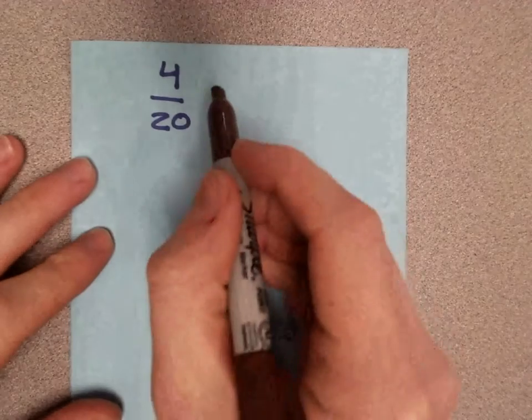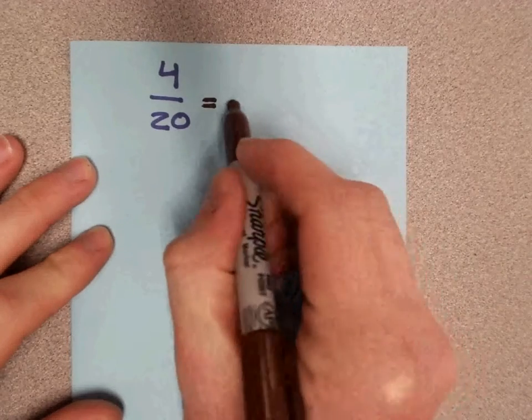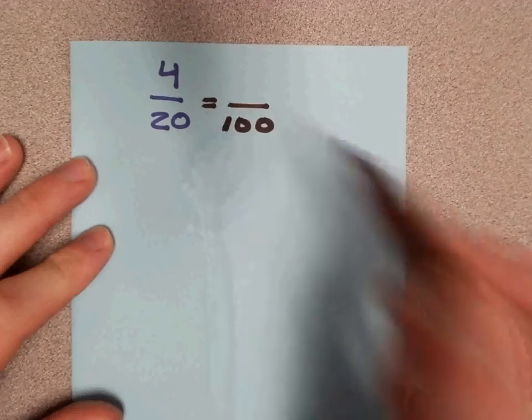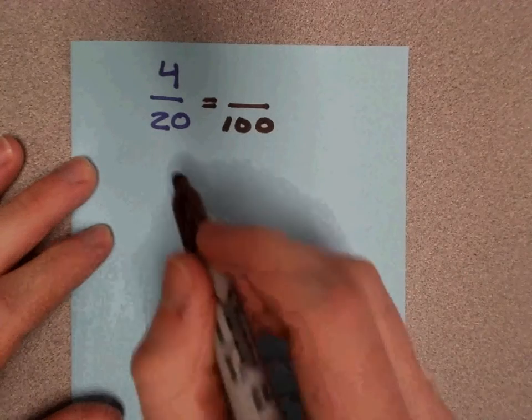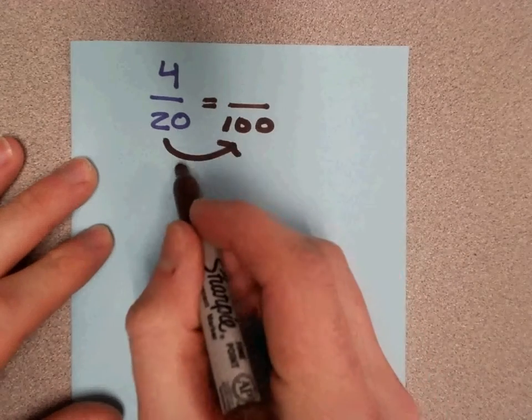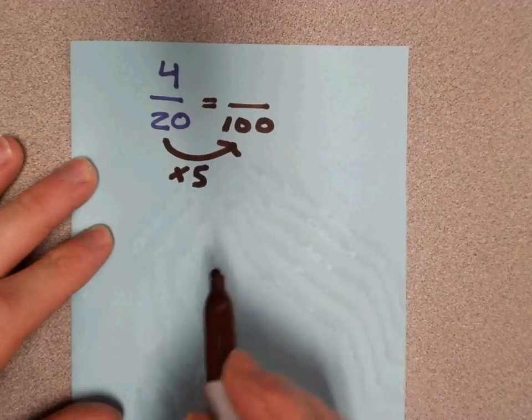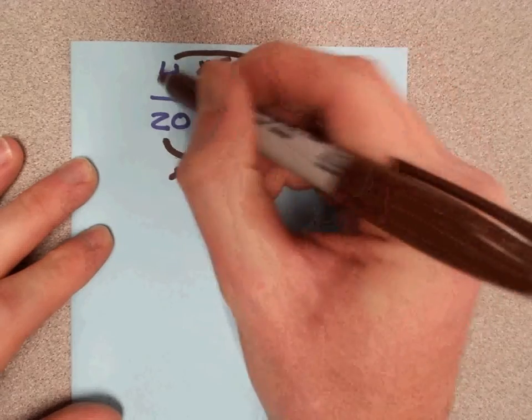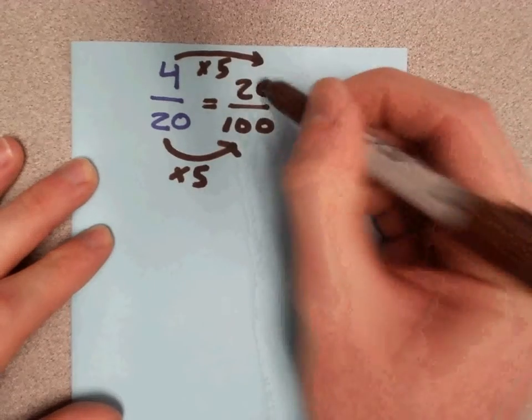So if I can turn 20 into 100 somehow, I'll just take the top number, the numerator, and turn it into a percent. So I'm going to set up a proportion. I'm trying to turn 20 into 100. In order to do that, I could multiply by 5. If I multiply across the bottom by 5, I'll have to multiply across the top by 5. 4 times 5 will give me 20.